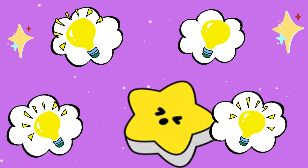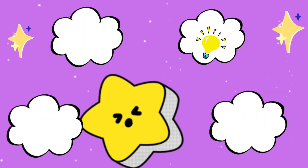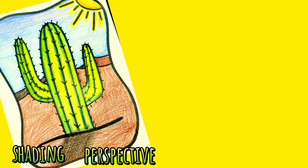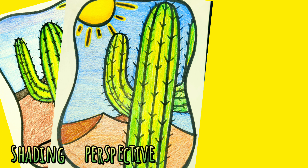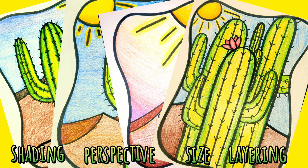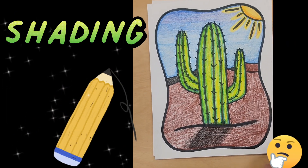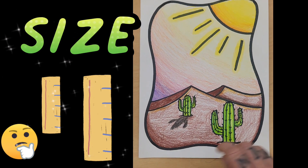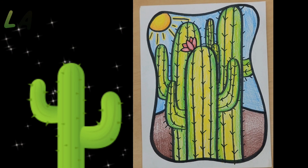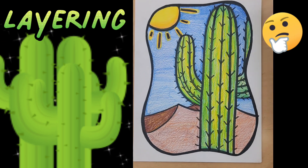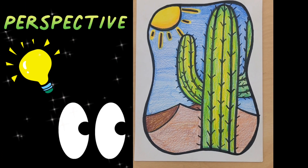So now that you have a few ideas of what space looks like in artwork, here is what our next art lesson is together. Using colored pencil and construction paper, you'll be creating one of these four desert scenes using a cactus as your main subject. Will you use shading? Or will you use size? Will you use layering to create space? Or will you draw your desert scene with a unique perspective?